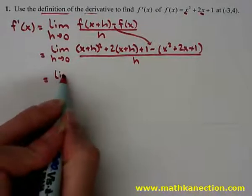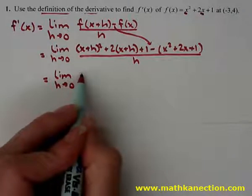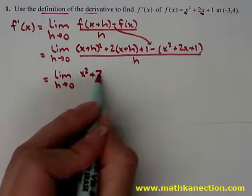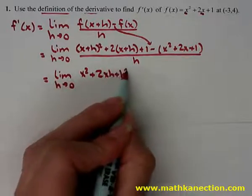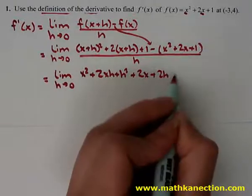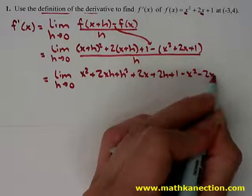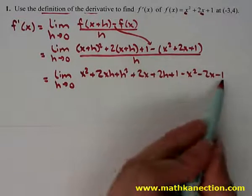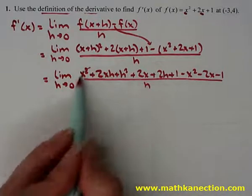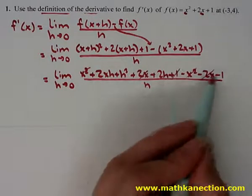So the limit as h approaches 0: distribute x plus h squared to get x squared plus 2xh plus h squared, distribute the 2 to get plus 2x plus 2h plus 1, and distribute the minus sign to get minus x squared minus 2x minus 1, all over h. The x squareds cancel, the 2x's also cancel, and the 1s cancel.